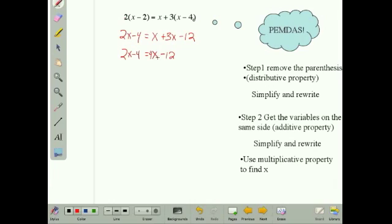Alright, so now I've got a dilemma. I've got x's on both sides of the equal sign. Can't have that. So I'm going to subtract 4x from both sides using my additive property of equality. And at the same time I'm doing that, I'm going to add 4 to both sides to get my numbers by themselves, and that cancels out. So I want to simplify. Negative 2x is equal to negative 8.